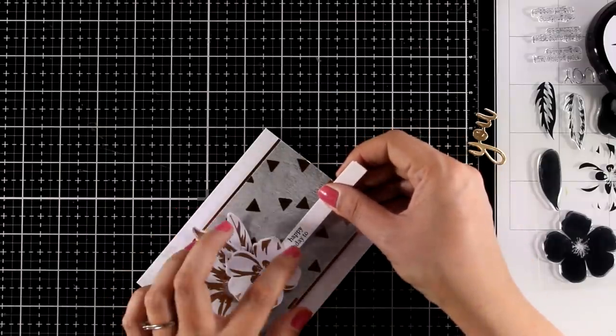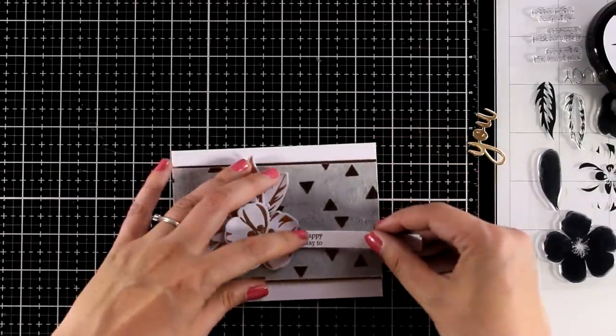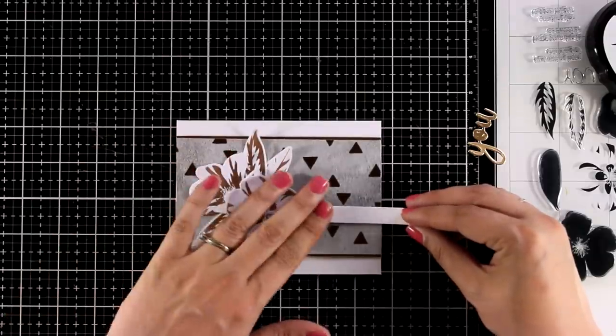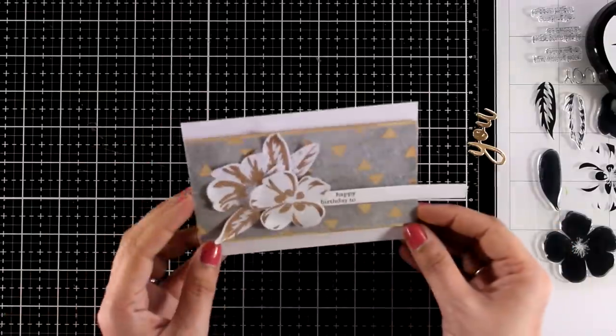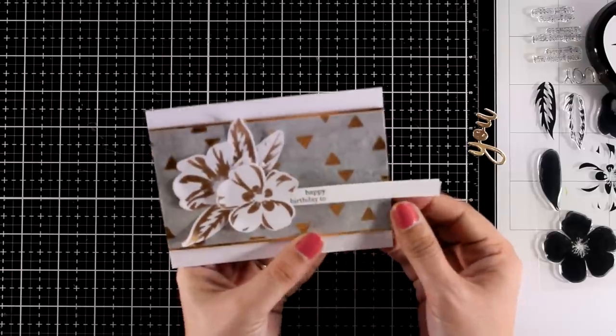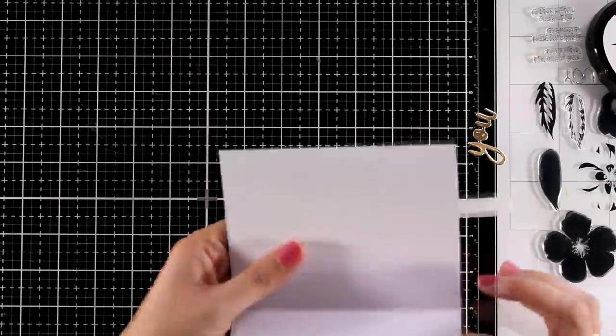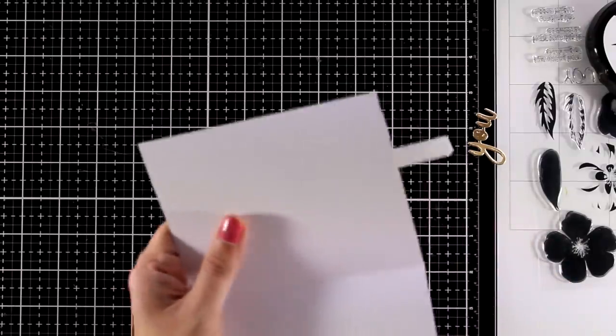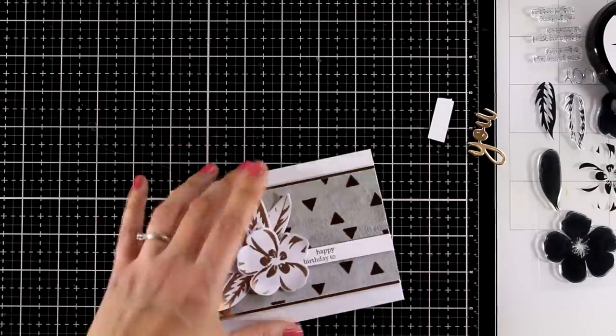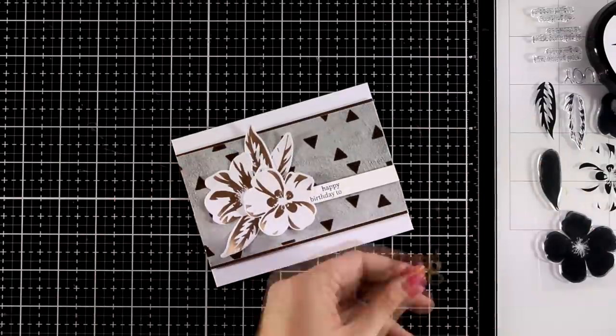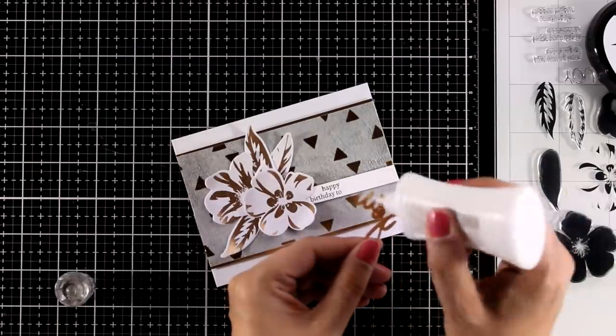Then to complete your sentiment you can either stamp one of the fonts that write you so you end up having happy birthday to you, or you can use the matching dies. In the matching die set they give you two different fonts of you. I used one of them to cut it out from a gold cardstock and I'm going to stick it down.